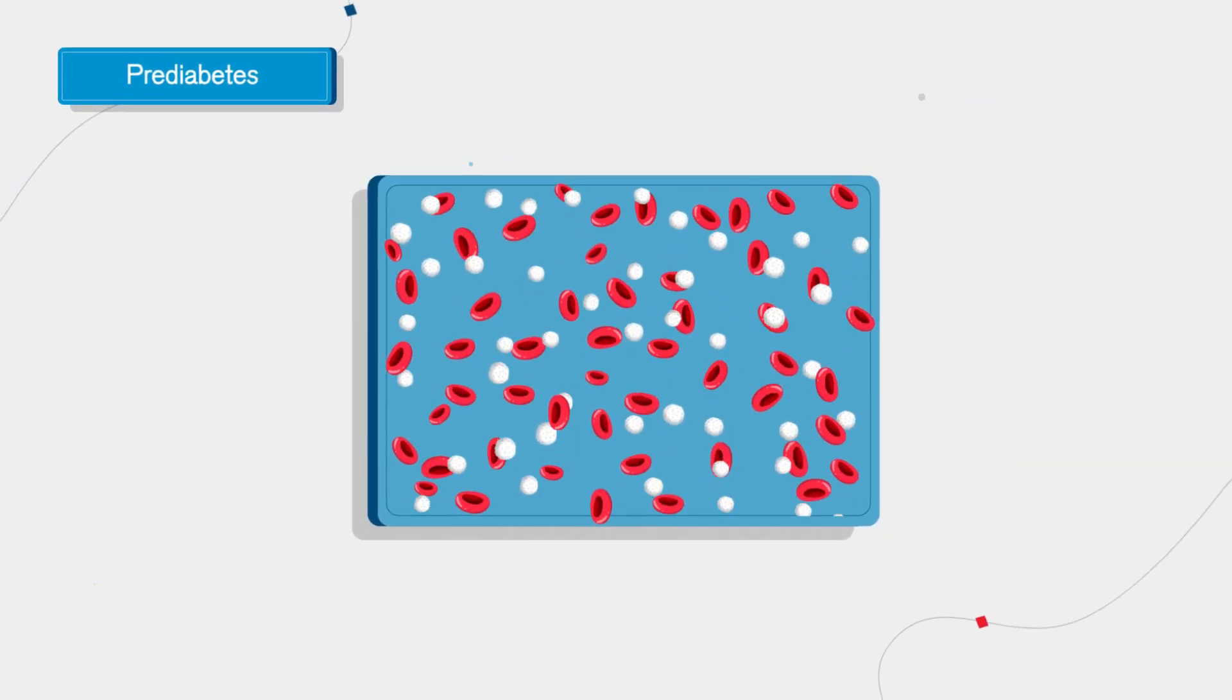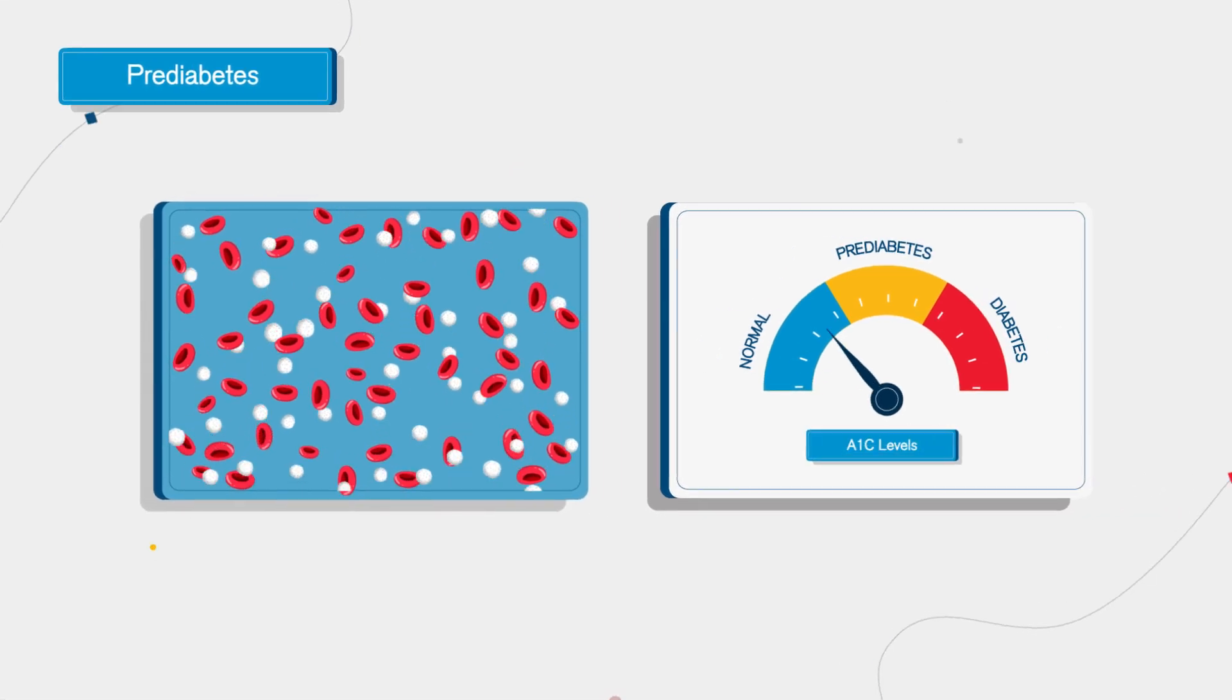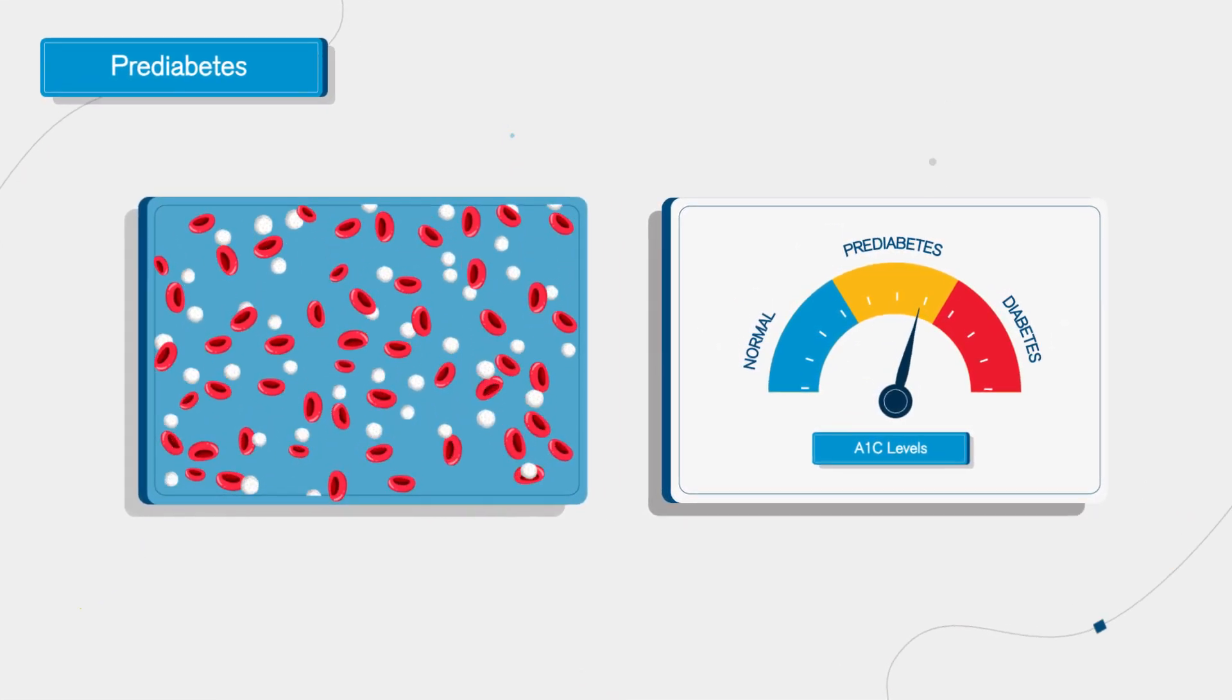Prediabetes also indicates resistance to insulin. Blood sugar levels are higher than normal, but not at diabetic levels.